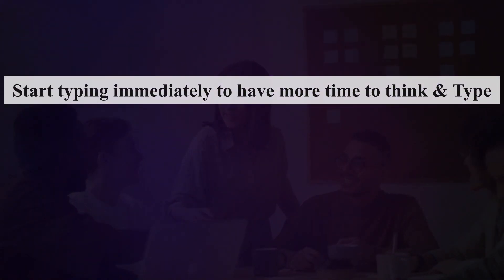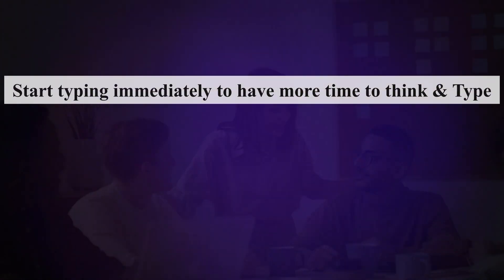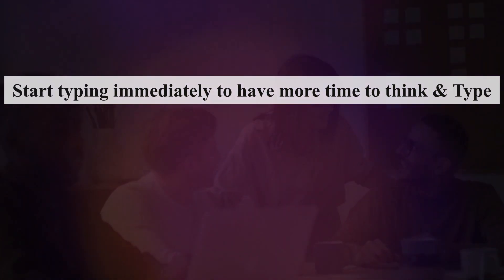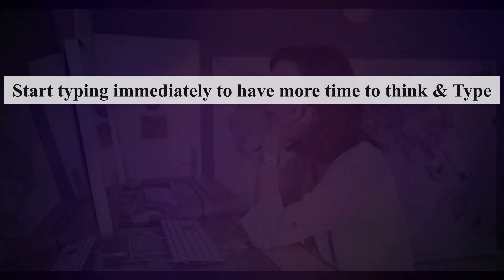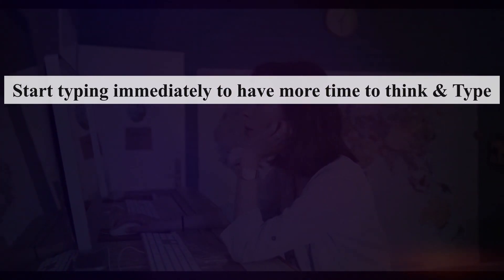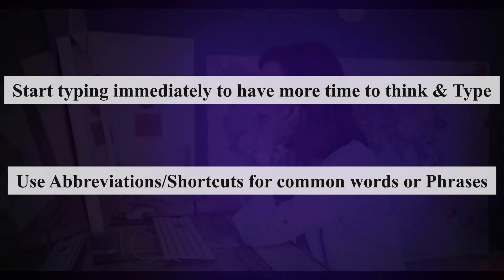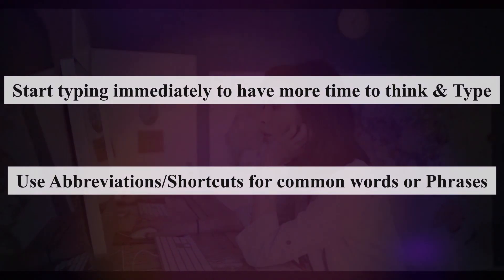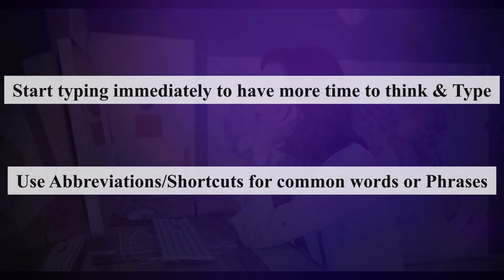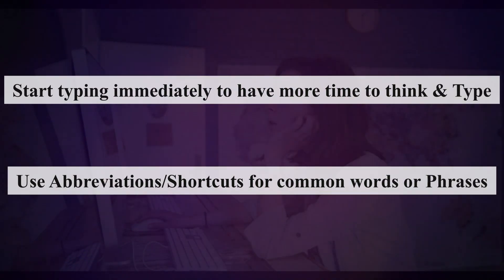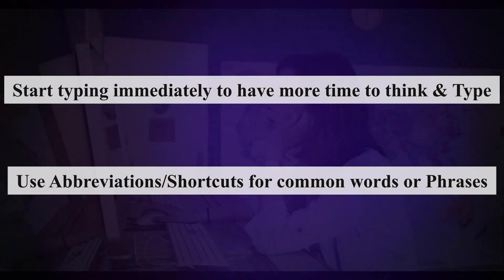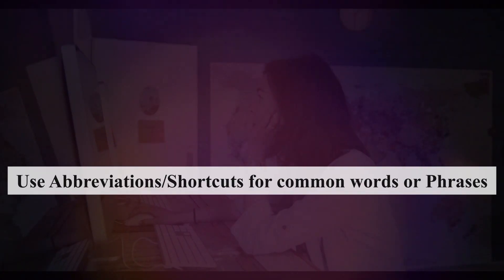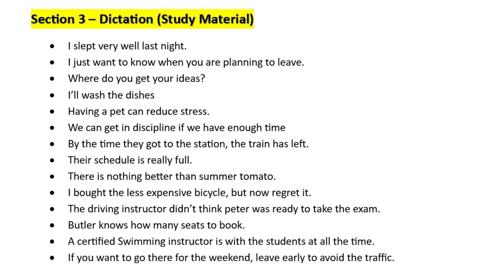Another tip to clear this section is to start typing as soon as you hear the sentence. By doing this, you will get more time to think and type, and with the flow, you would also increase your chances of completing the sentence without forgetting it. Another good practice is to use abbreviations and shortcuts — develop a set of personalized abbreviations for common words or phrases to help you type more efficiently during the dictation. Let me also share a few sample sentences to help you prepare better.